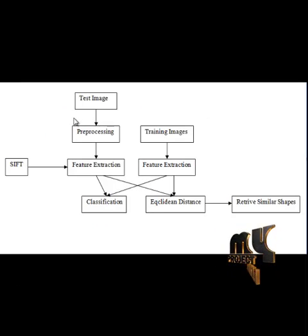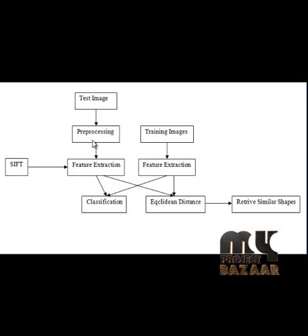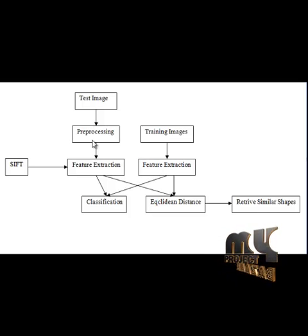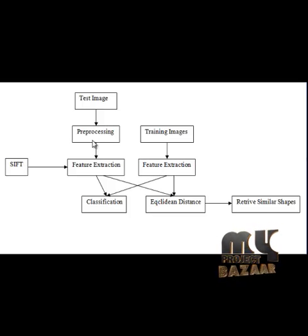Looking at the flow of the process — Shape Similarity Analysis by Self-Tuning Locally-Constrained Mixed Diffusion — initially the test image is taken and preprocessed. In preprocessing, we apply a median filter. The median filter is used to remove noise from the input images. It is a non-linear digital filtering technique often used to remove noise, and such noise reduction is a typical pre-processing step to improve results in later processing.